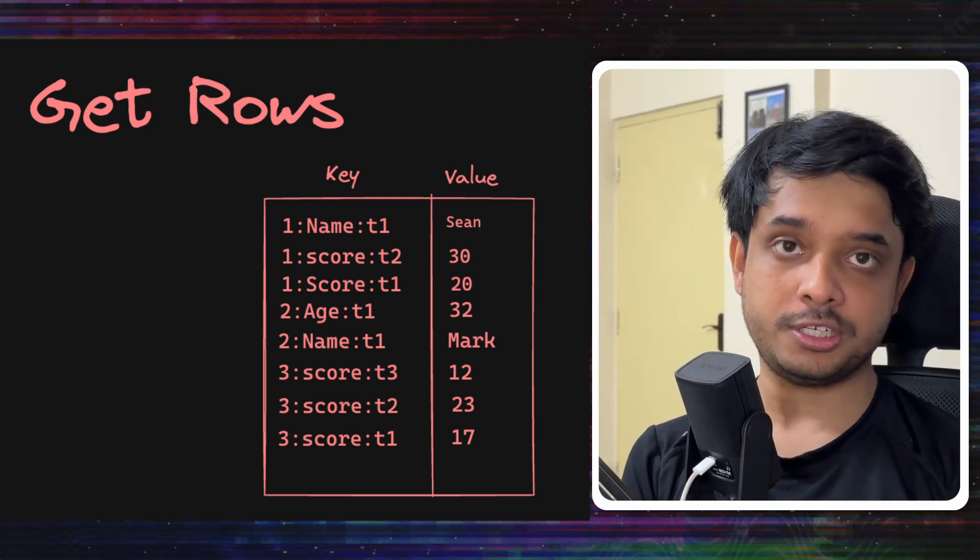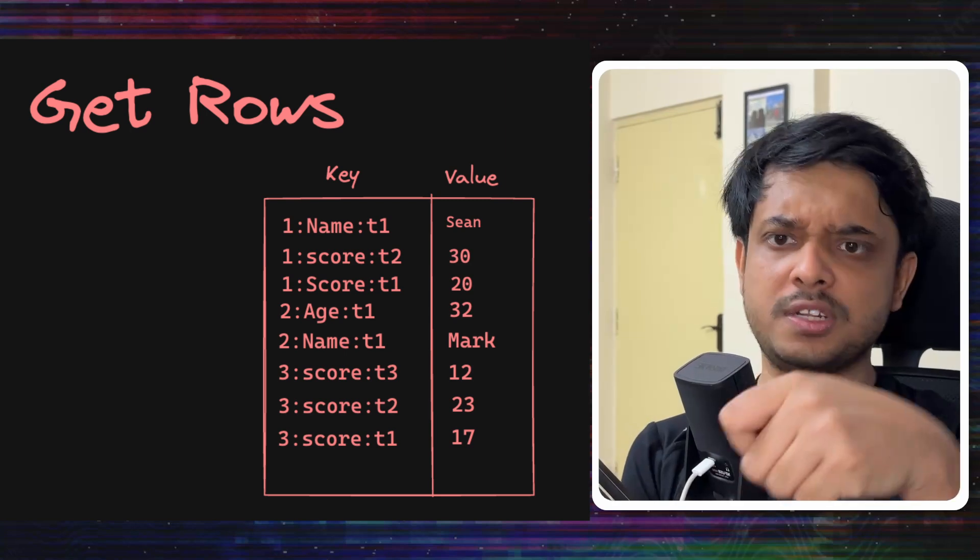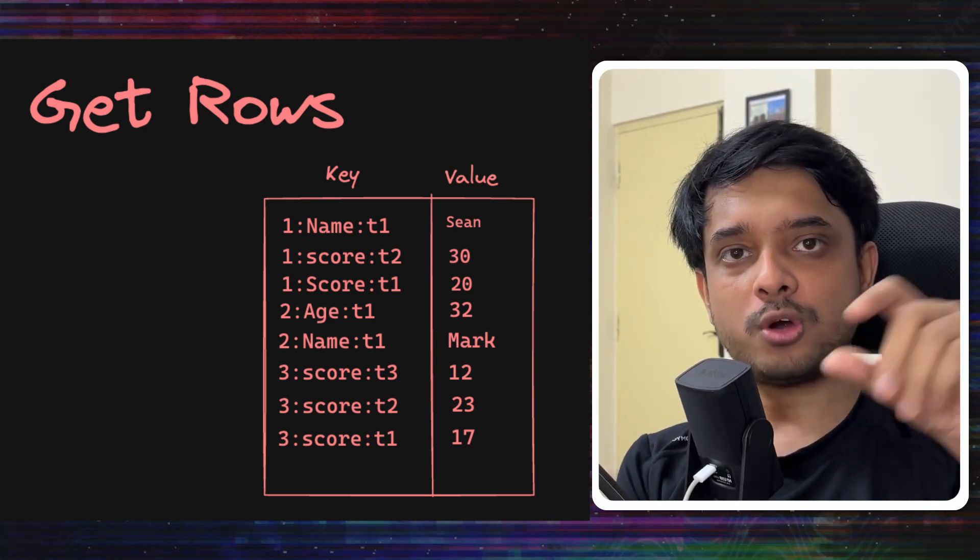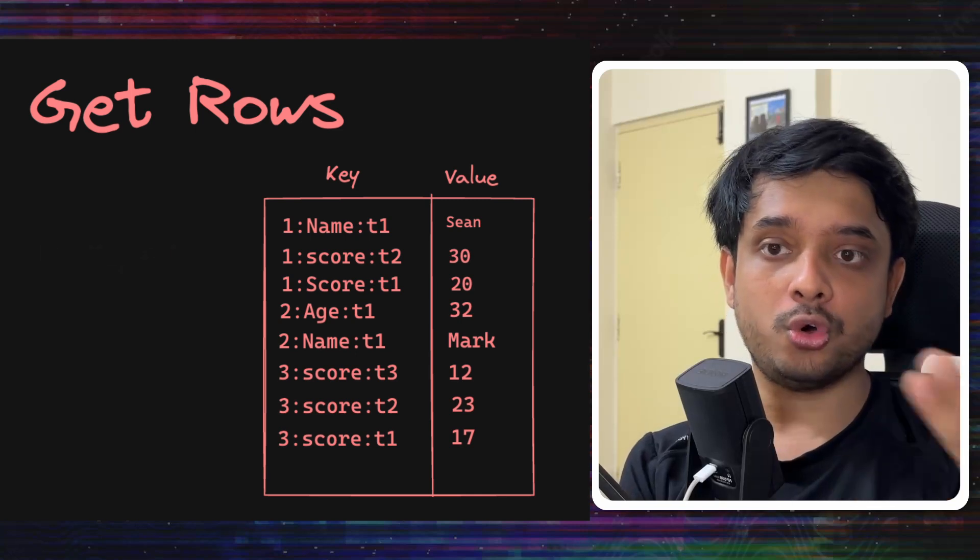Now to get a particular row, you will have to supply the row key which identifies the row. And of course, you will have to supply the data set when you are working with the database. So let's say if someone wants to access all the values for row key 1, how will we go about it?